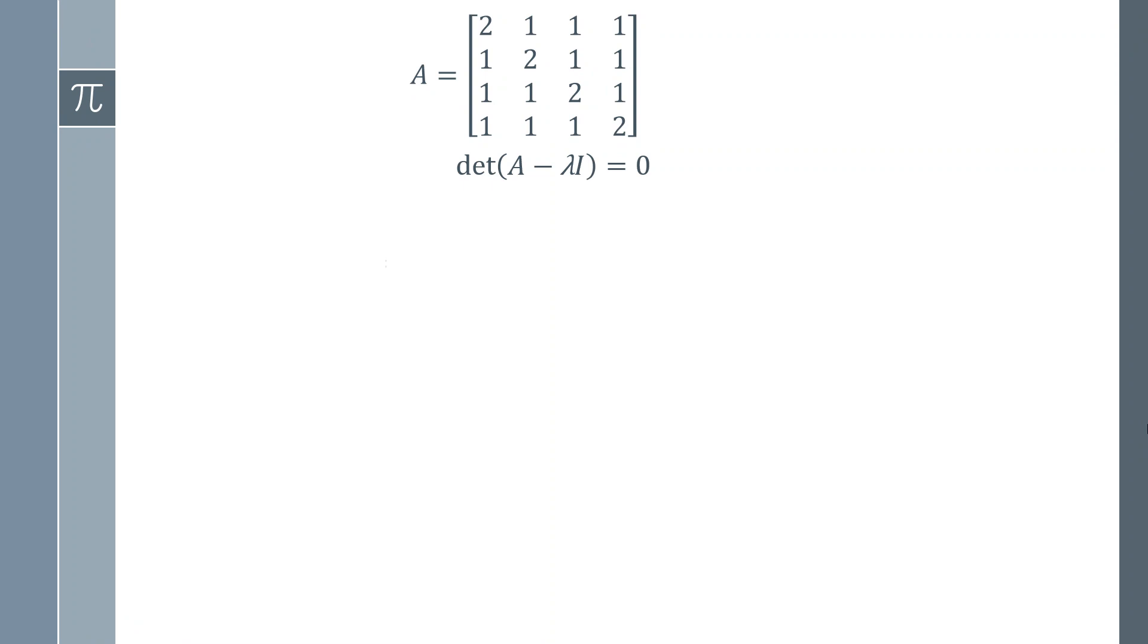We're going to be solving the determinant of A minus lambda I equals 0. That's the fundamental way that we're going to solve this. We're going to get a characteristic equation and find the solutions of it. The determinant is where the clever step comes in.